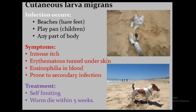Those who suffer include barefooted children, as the larva penetrates through the skin and can affect any part of the body. For example, at a beach where cats pass feces containing eggs, the eggs mature into larvae in the sand, and children playing there can get infected. Symptoms of cutaneous larva migrans include creeping eruption or Ancylostoma dermatitis, which produces intense itching, an erythematous tunnel under the skin, a high eosinophil count in the blood, and proneness to secondary bacterial infections.